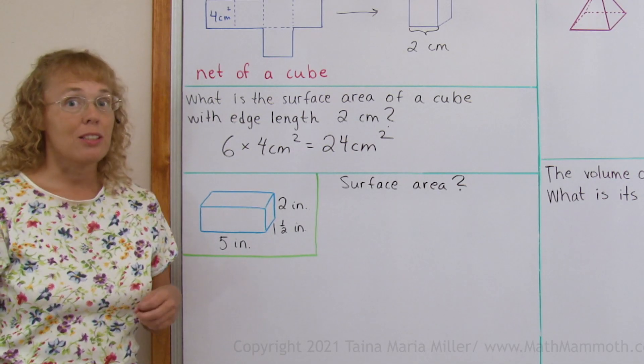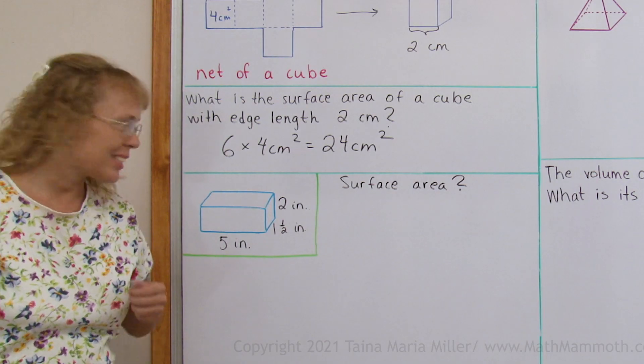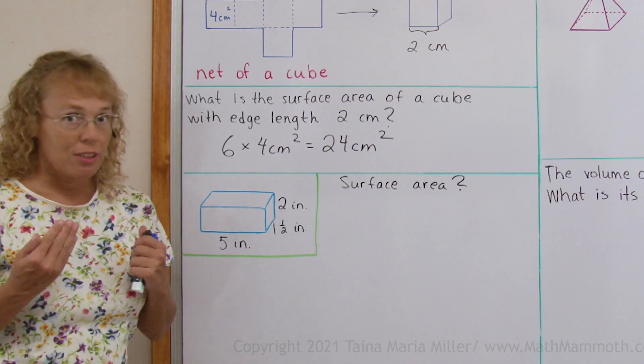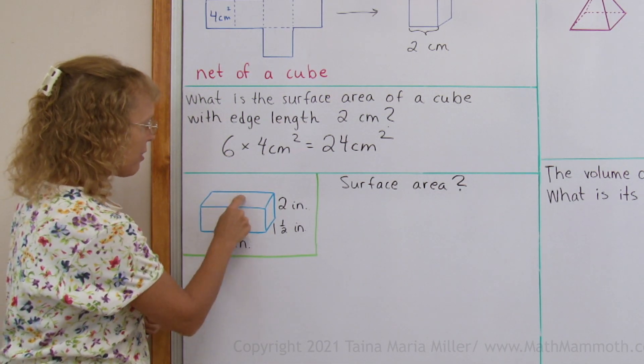Now next we are going to solve the surface area of this box, or rectangular prism. Its dimensions are 5 inches this way, 1.5 inches deep, and 2 inches tall. For the surface area, we have to look at each face here and calculate the areas.